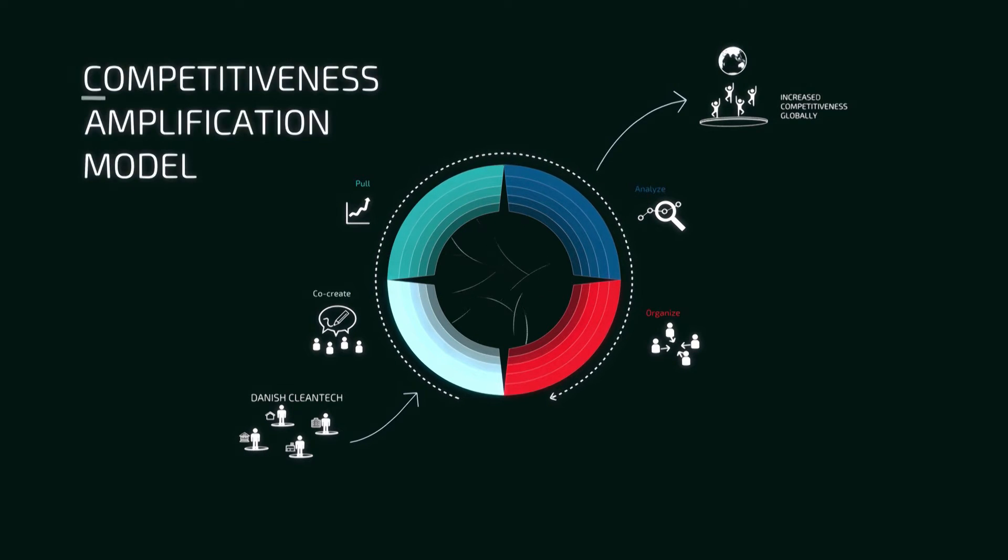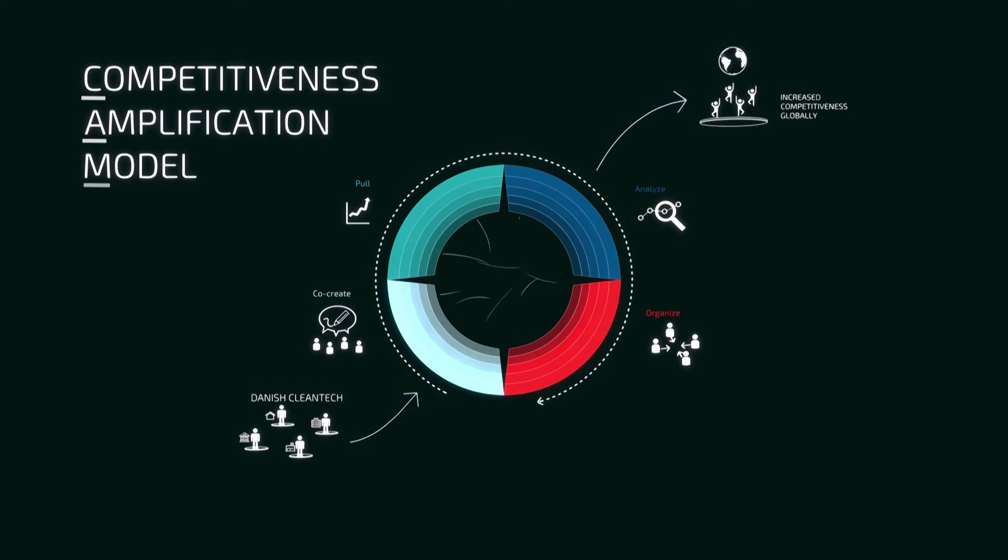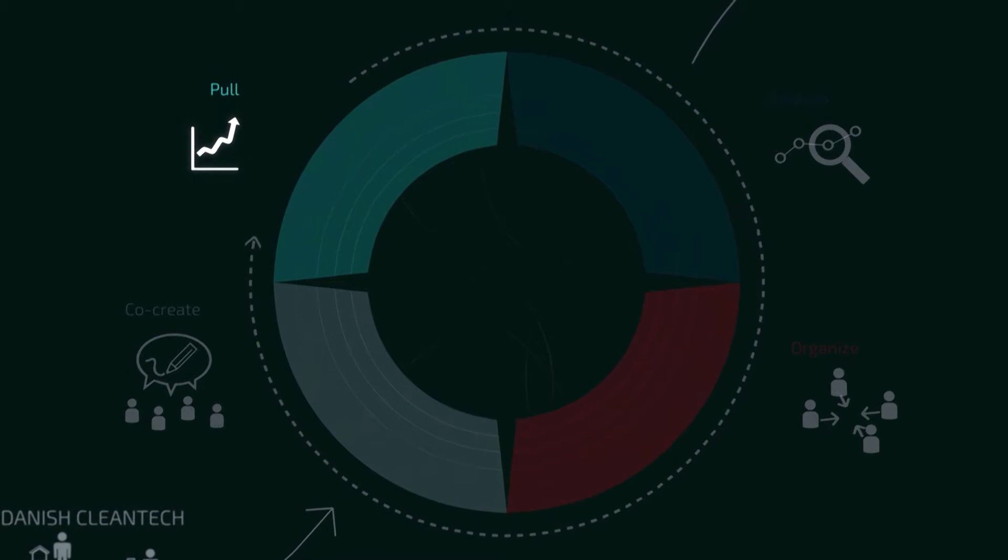This model is called the Competitiveness Amplification Model. The main benefit for Danish companies when using the Competitiveness Amplification Model is to be better equipped at dealing with co-creation, which really means engaging with the local stakeholders in the foreign markets, being better adapted to understanding their needs, and engaging in a much closer dialogue with them in building the right solution.